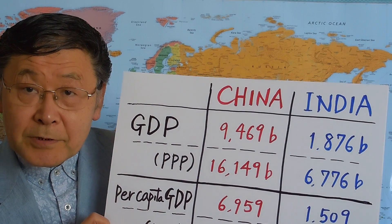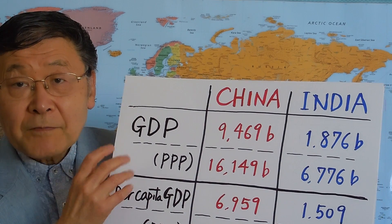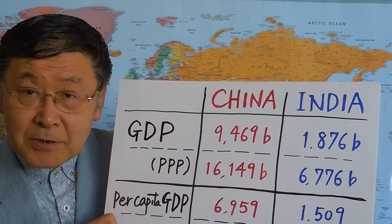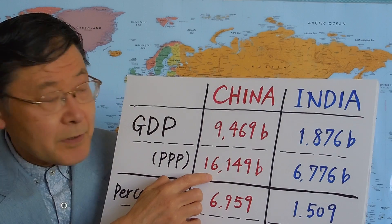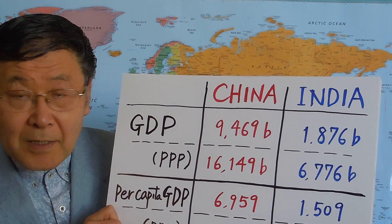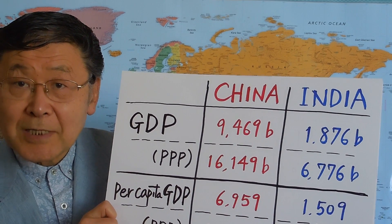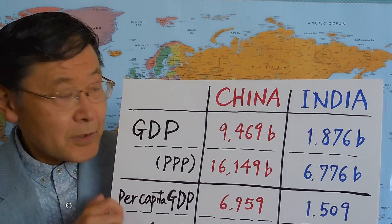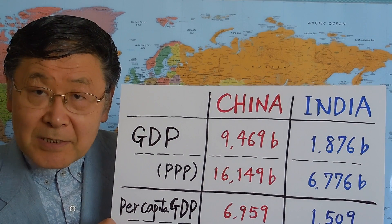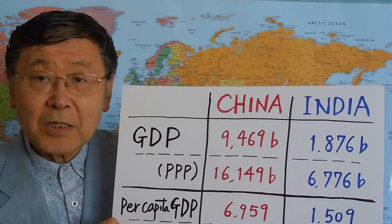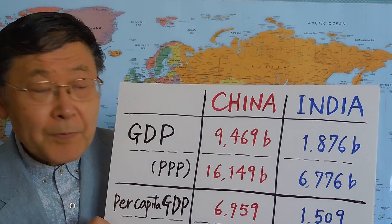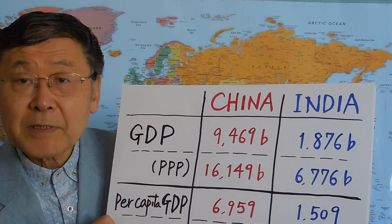These are nominal numbers, but if you divide those numbers by the respective price levels in those two countries, you get these figures: $16,149,000,000,000 in China — that's about the same as that in the United States in real terms. This is the 2013 figure, so by now China has surpassed the United States in total GDP in real terms, as we all know. Whereas India's real GDP is $6,776,000,000,000.